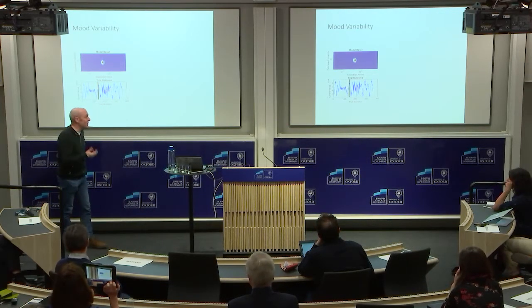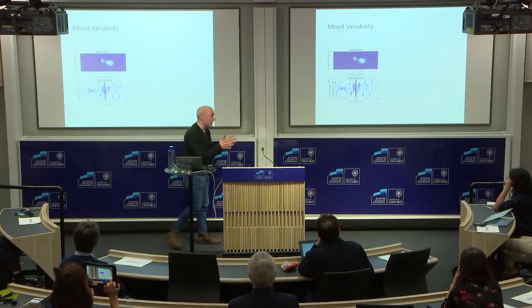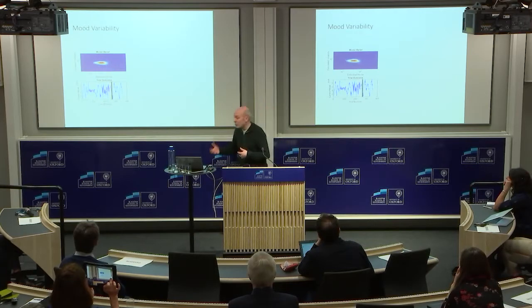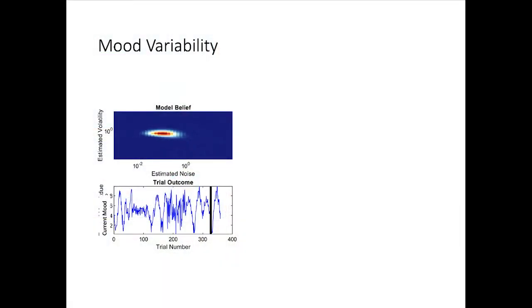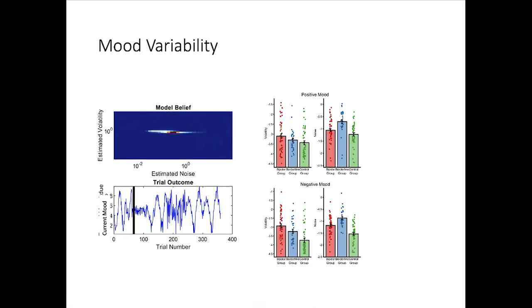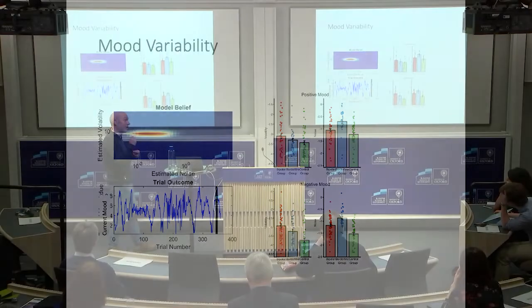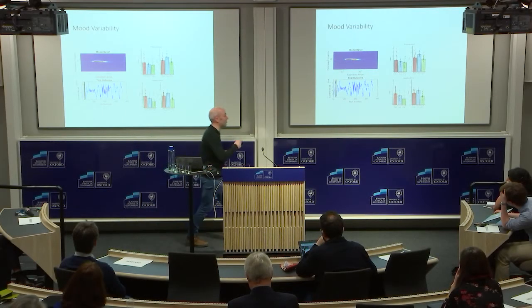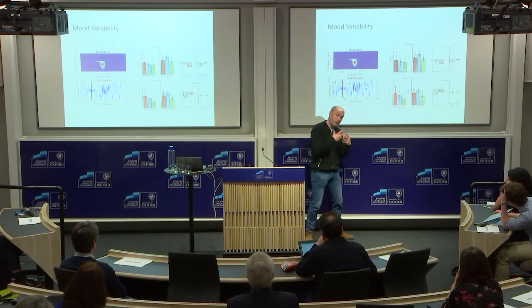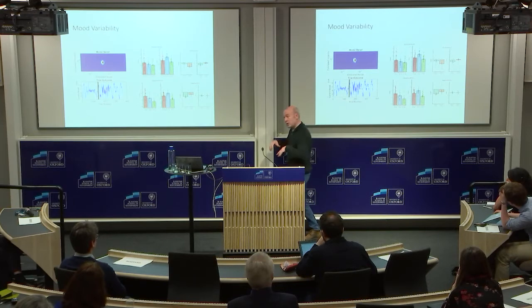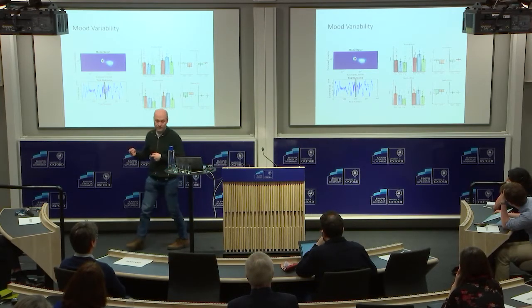Taking that same idea and applying it to a different context: you can think about mood variability and what causes it in clinical populations. Both bipolar disorder and borderline personality disorder involve variable mood, but our models show they have different types of variability. Bipolar disorder specifically shows a change in the mean of what drives mood, whereas borderline personality disorder shows a change in the randomness that drives mood.